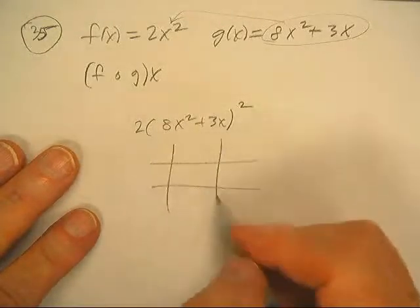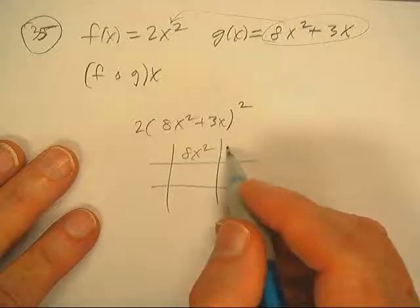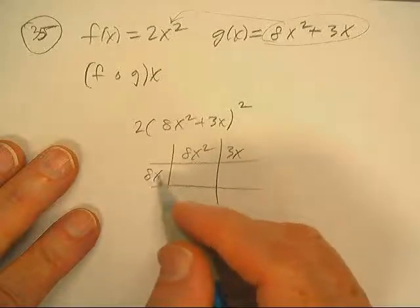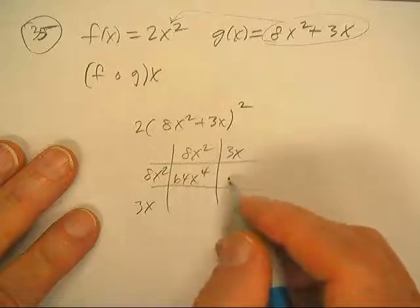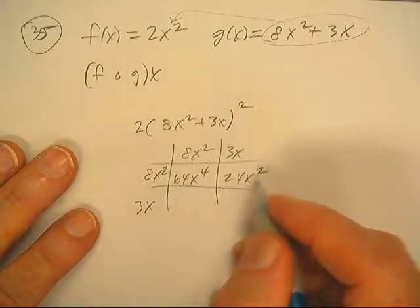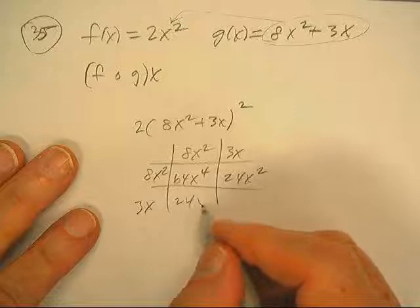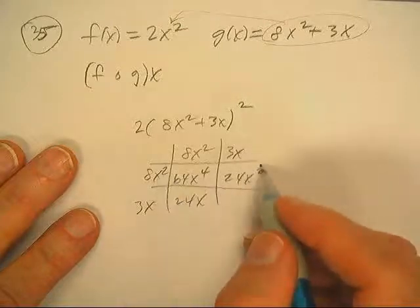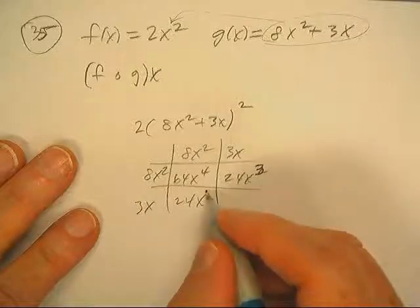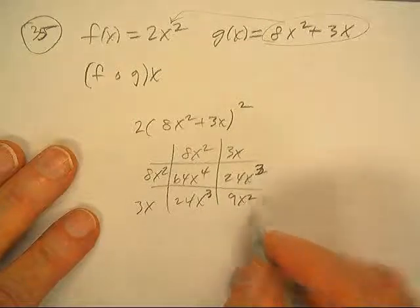Okay, so I can come down here and square it. 8x squared plus 3x, times 8x squared plus 3x. 64x to the 4th, 24x cubed, 24x cubed, and 9x squared.